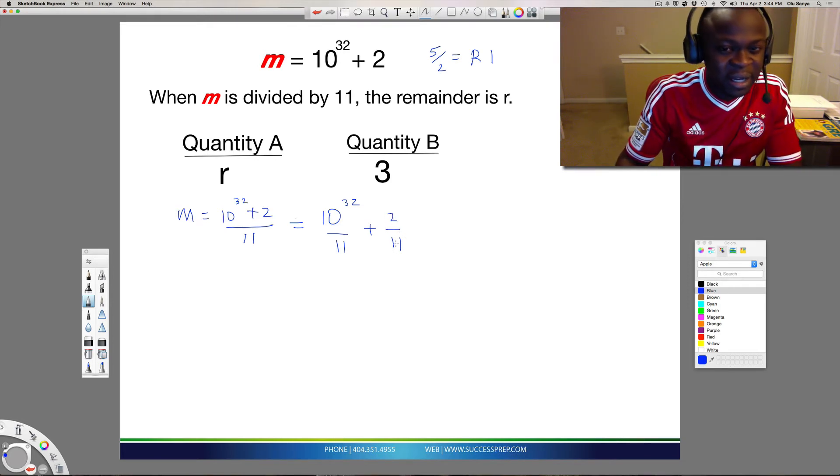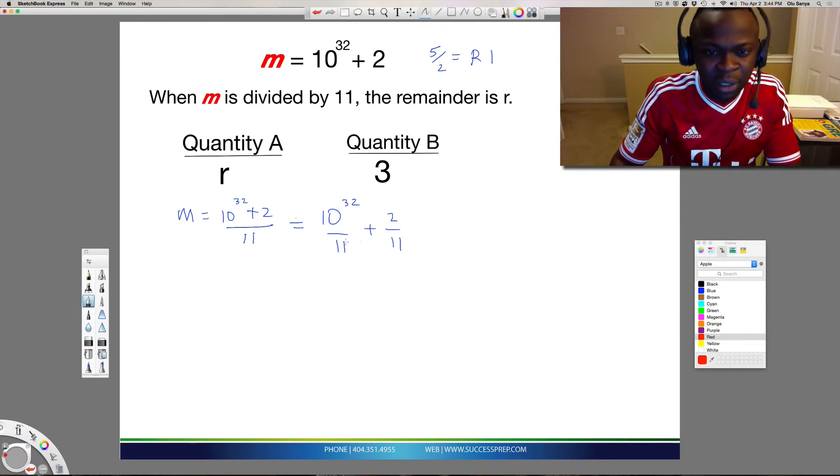If you notice here, the 2 is so small, this 11 doesn't even go one time, right? So the question is how do you find that remainder? Well, it's a very simple concept there.